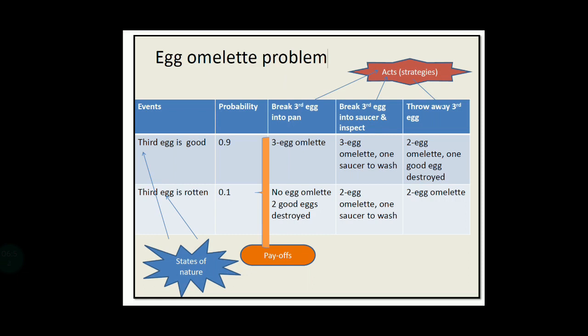To summarize the egg example: the states of nature are 'third egg is good' and 'third egg is rotten.' The three strategies are: put it into the pan, break it into a saucer and inspect, or throw it away. The payoffs are a three-egg omelet, a two-egg omelet with a saucer to wash, or a two-egg omelet — these illustrate the basics of states of nature, strategies, and payoffs.